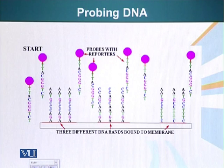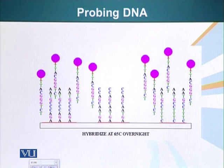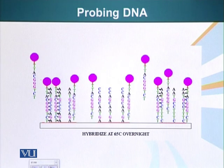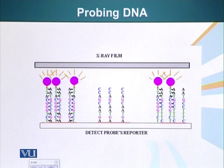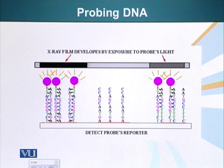If the probe was radioactive, it will generate bands on the X-ray film. As we were discussing our beta globin gene: if it had the restriction site, it will generate two fragments which will be visible on the X-ray film. If it didn't have the restriction site, there will be only a single band. As you can see here, there are two bands, meaning the restriction site is present.